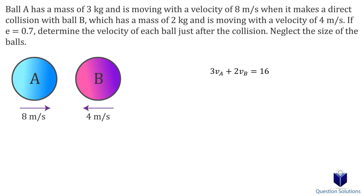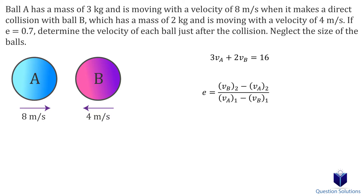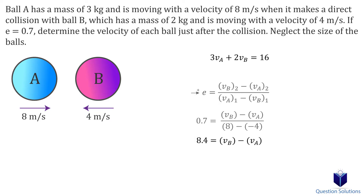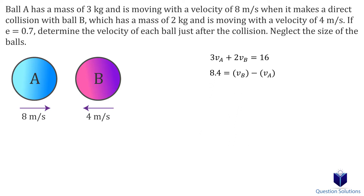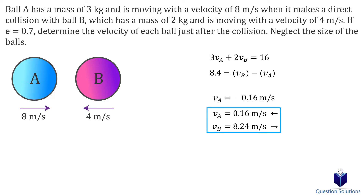Next, we can think about the coefficient of restitution. Let's write its equation and plug in what we know. Don't forget, we are still assuming right to be positive, so the velocity of ball B is still negative. Let's simplify this equation. We now have two equations with two unknowns. Let's solve to get our answers. We get a negative value for the velocity of ball A, which means it was going to the left.